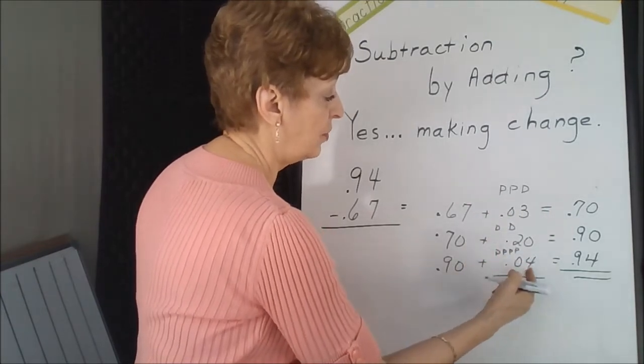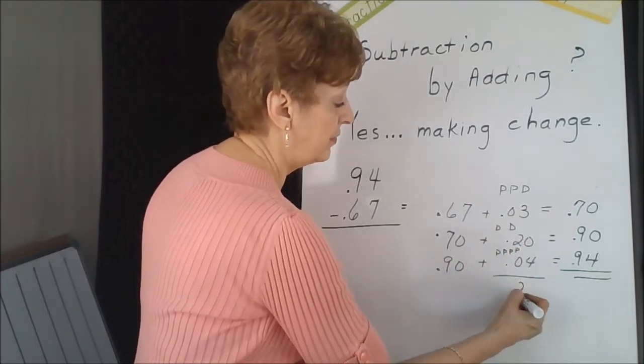And what do I still have left in my pocket? Three cents plus four cents is seven cents, and 20, we have 27 cents.